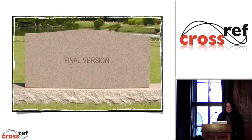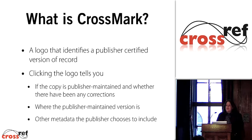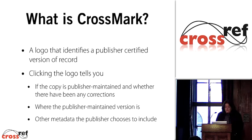So what is Crossmark, and what does it have to do with all this? Crossmark is a logo that identifies a publisher-certified or publisher-maintained version of record. Clicking on that logo tells you if the copy you're looking at is maintained by the publisher, if there are any corrections, and where the publisher-maintained version can be located via the DOI. It also includes any other optional metadata the publisher may choose to include — such as funding sources and other things.